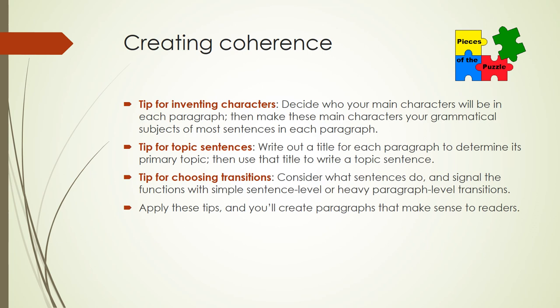Second, the tip for topic sentences: consider writing out a title for each paragraph to determine its primary topic, then use that title to write a topic sentence for the paragraph — simple but effective. Third, the tip for choosing transitions: consider what sentences do within your paragraphs, such as zoom in to examples to provide evidence, zoom out to make general conclusions, focus on logical relationships, and so forth. Then signal the functions with simple sentence-level transitions or heavy paragraph-level or logic-level transitions.